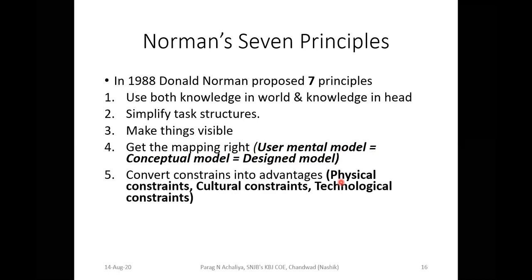The fifth principle states to convert constraints into advantages. The constraints can be physical, cultural, or technological. These are the types that need to be considered while interacting with any system.